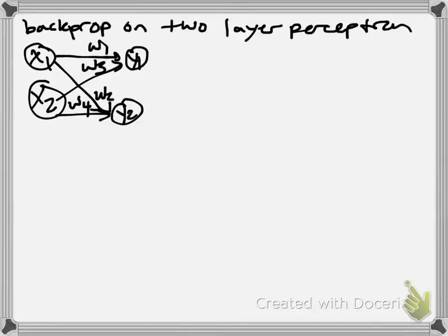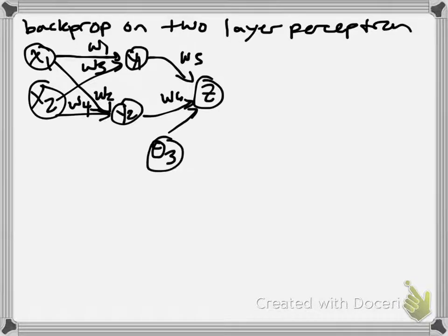And at the next step, we have two weights onto our output neuron, W5 and W6. These neurons also all each have a bias that they get as input. Theta 2, theta 3, and then let me see if I can squeeze in that theta 1 there.